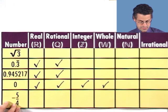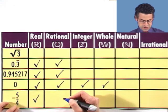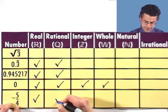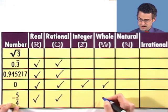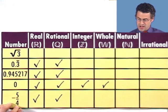Negative 5 fourths, what do we have here? It's a real number. It's rational because it's the quotient of two numbers. It's not an integer, not a whole number, not a natural number, not an irrational number.